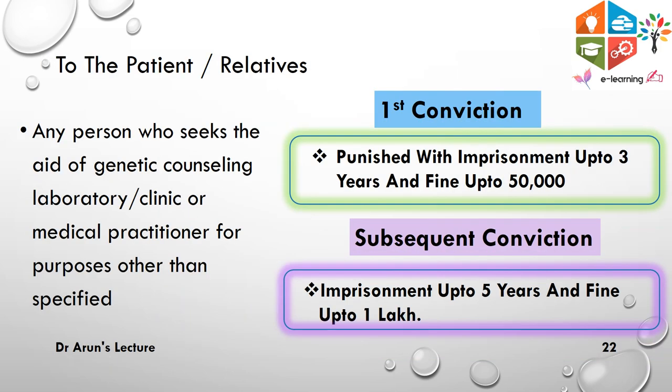Regarding patients and relatives: any person who seeks any of these services for a purpose other than that specified by this act will, on the first conviction, be punished with imprisonment up to 3 years and a fine up to one lakh rupees.